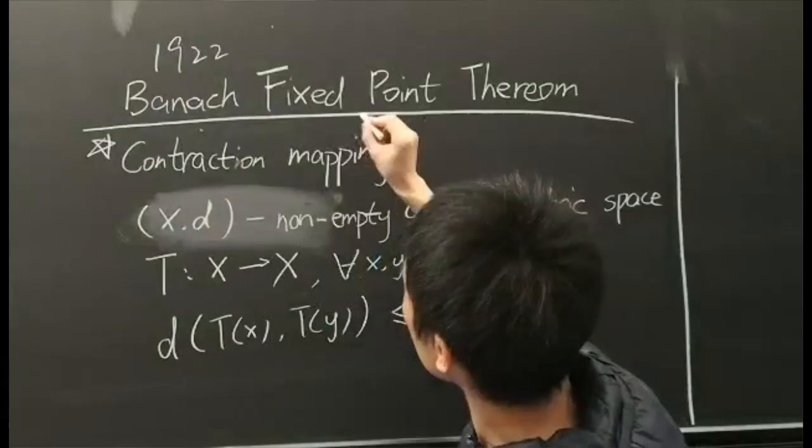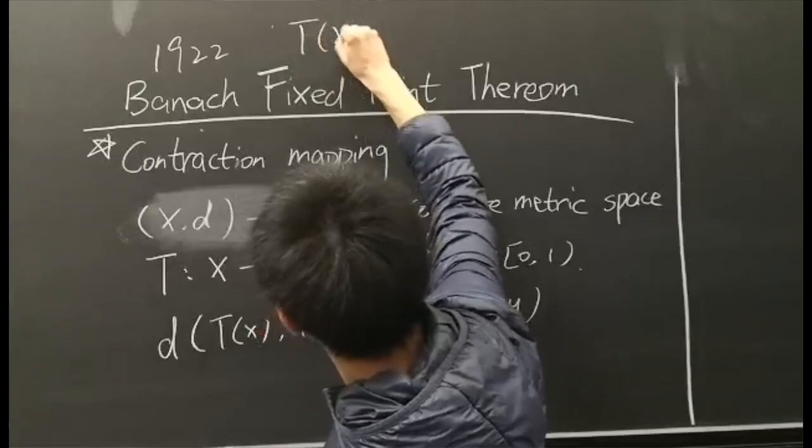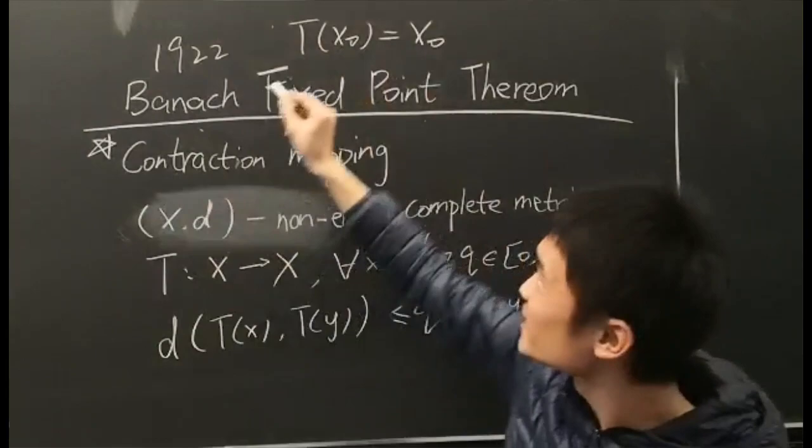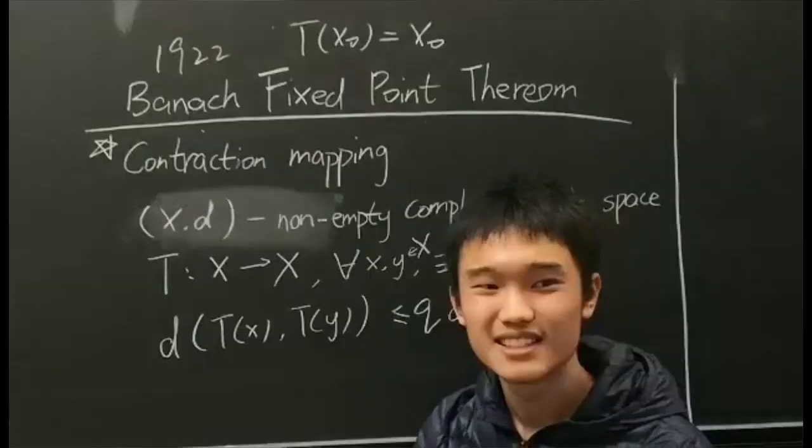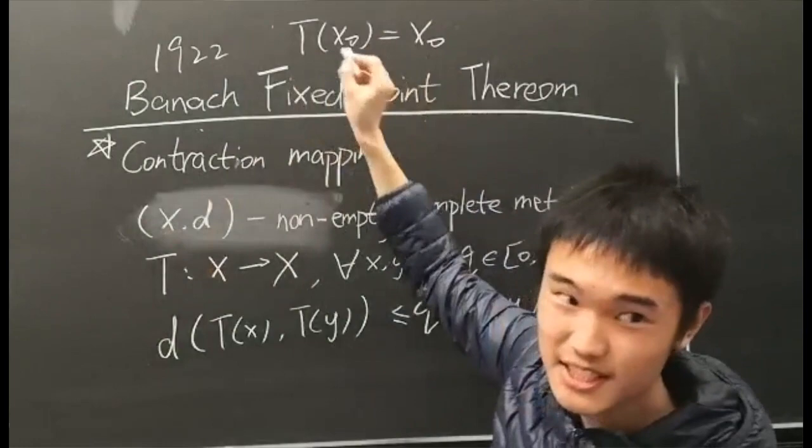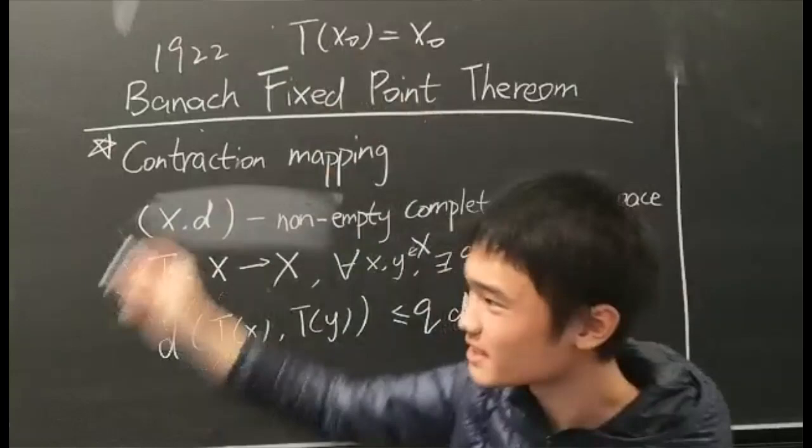So what is a fixed point? It's pretty simple. A fixed point is a kind of x0 which satisfies T(x0) equals x0. If x0 satisfies this situation, then x0 is a fixed point of a map T, because it doesn't move. It doesn't move by the transformation T.